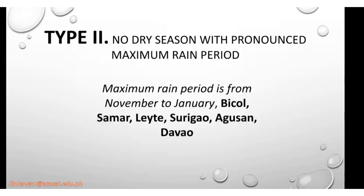For Type 2, they have no dry season with a pronounced maximum rain period. The maximum rain period is from November to January — that's three months. The places include Bicol, Leyte, Surigao, Agusan, and Davao region.